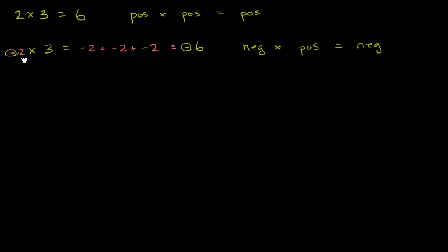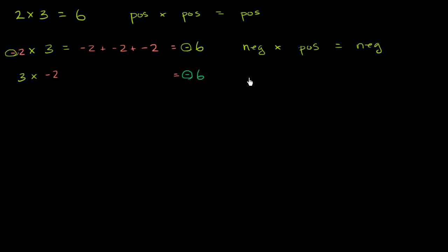Now what if we swap the order in which we multiply? If we were to multiply 3 times negative 2 — well, it shouldn't matter. The order in which we multiply things shouldn't change the product. Whether we multiply 2 times 3 we get 6, or 3 times 2 we get 6. So 3 times negative 2 should give us the same result — it's going to be equal to negative 6. We say 3 times 2 would be 6, one of these two numbers is negative, so our product is going to be negative. So a positive times a negative is also going to be a negative.